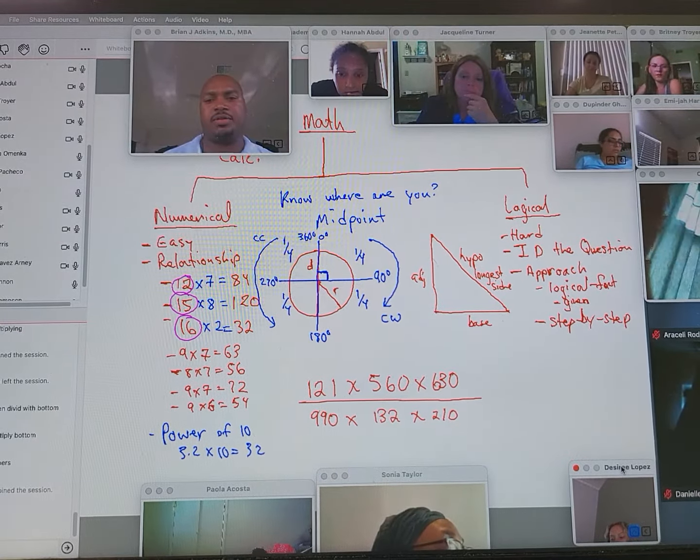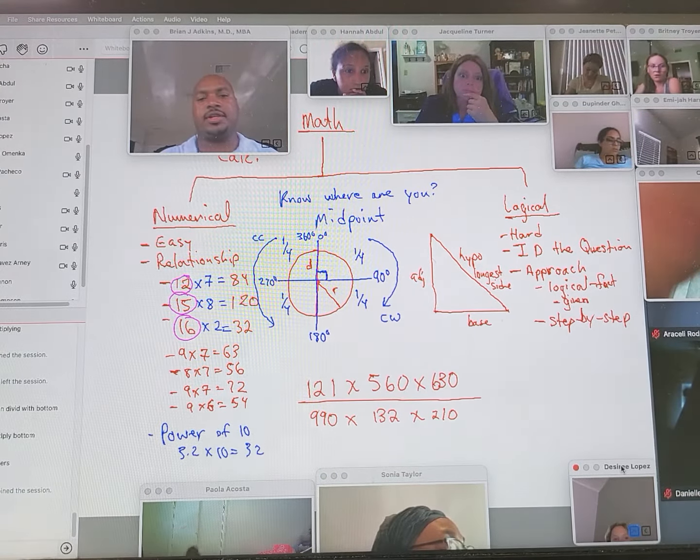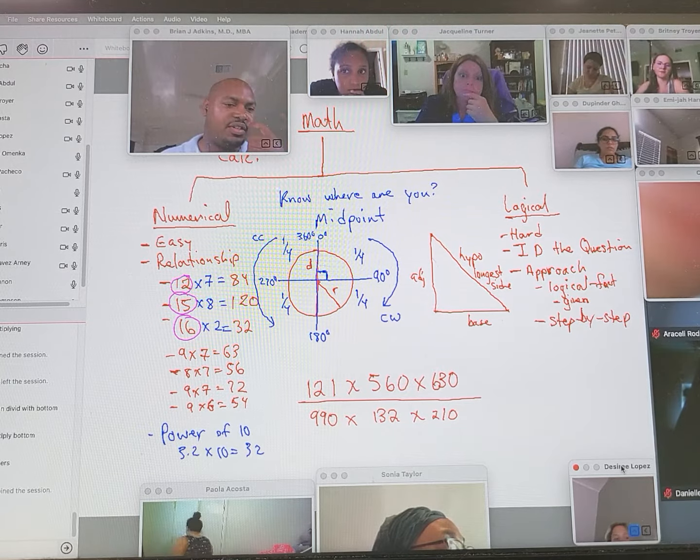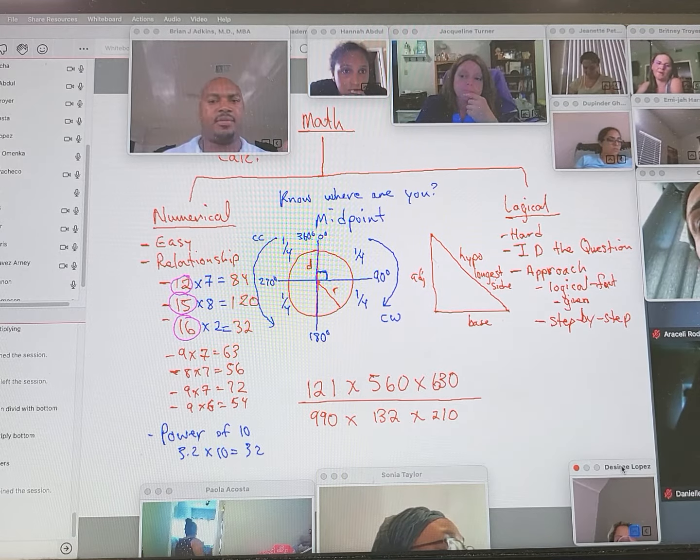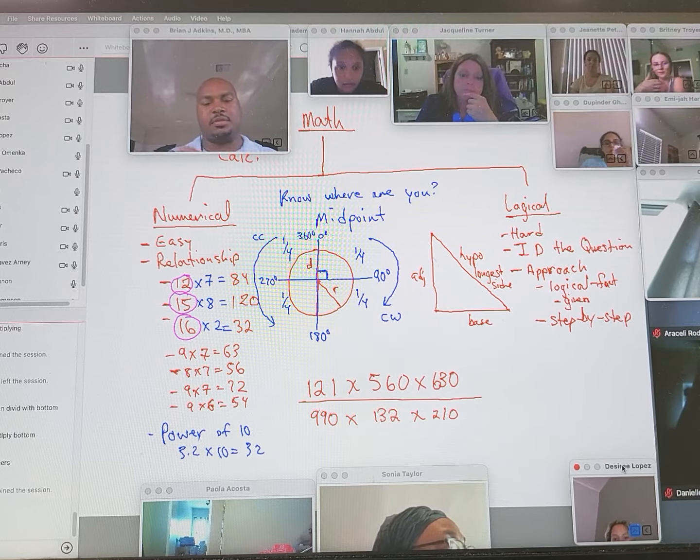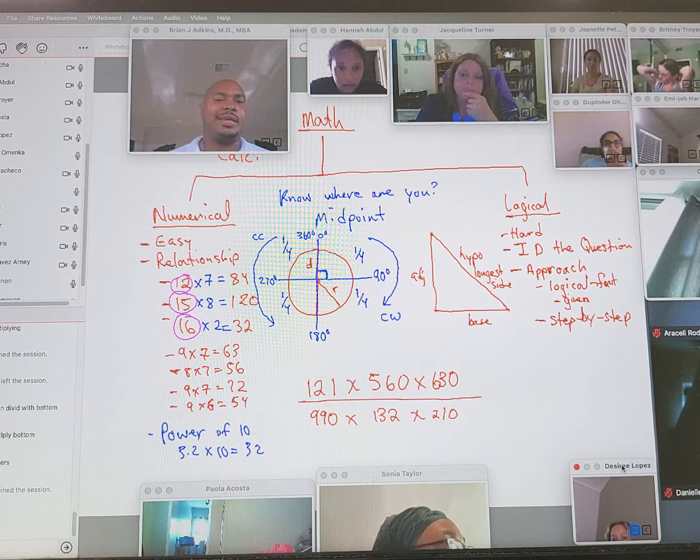All right, so good. So how should we approach this? What should we do first here? So let's understand what it means when you say, okay, we have these numbers on the top, we have these numbers on the bottom, which is going to multiply the top and multiply the bottom and divide by the two, right?